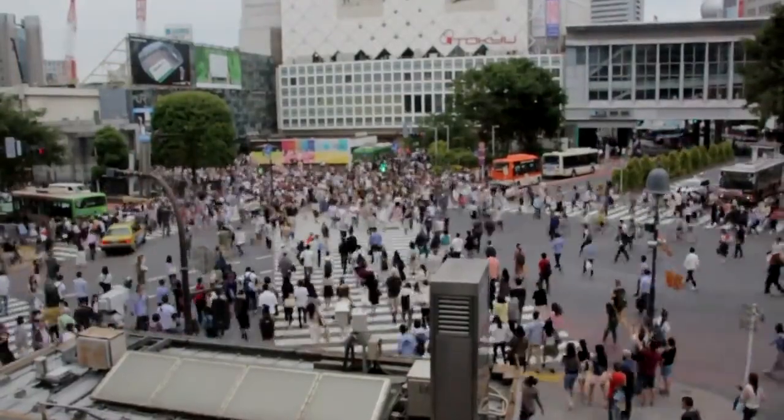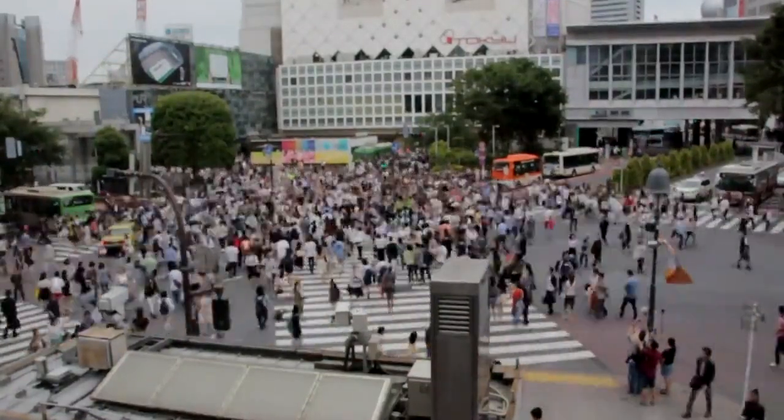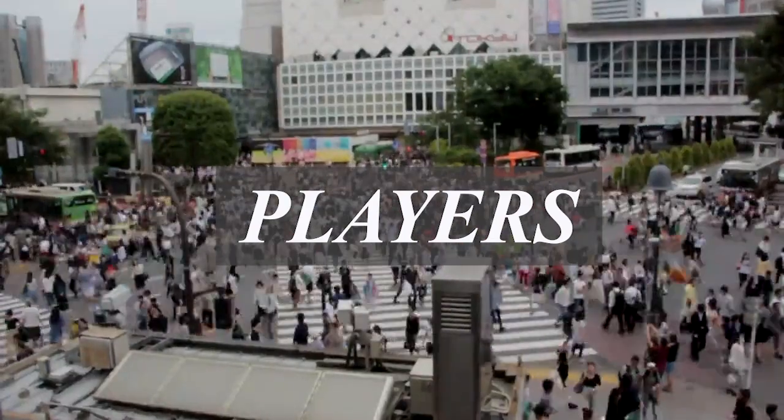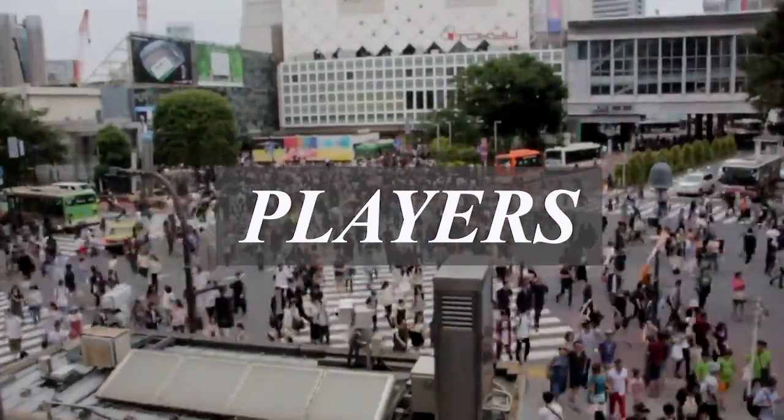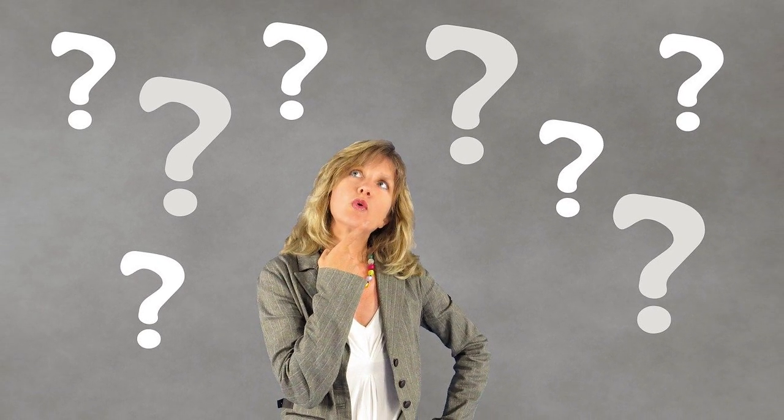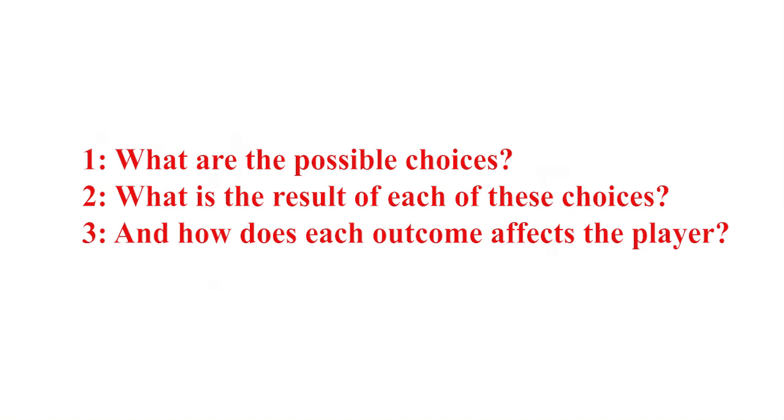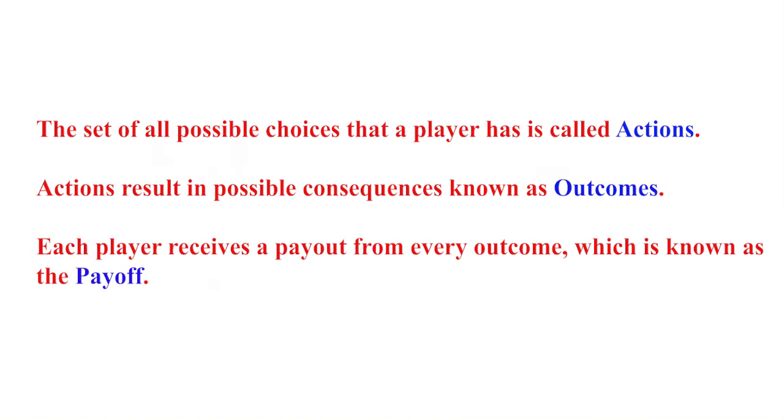All the strategic decision makers within the context of the game are players. Players could be competing individuals as in chess, or competing firms in a duopoly. In the context of the game, every player encounters a decision problem characterized by three fundamental questions. First, what are the possible choices? Second, what is the result of each of these choices? And third, how does each outcome affect the player? These questions help us formalize three basic concepts: action, outcomes and payoffs.